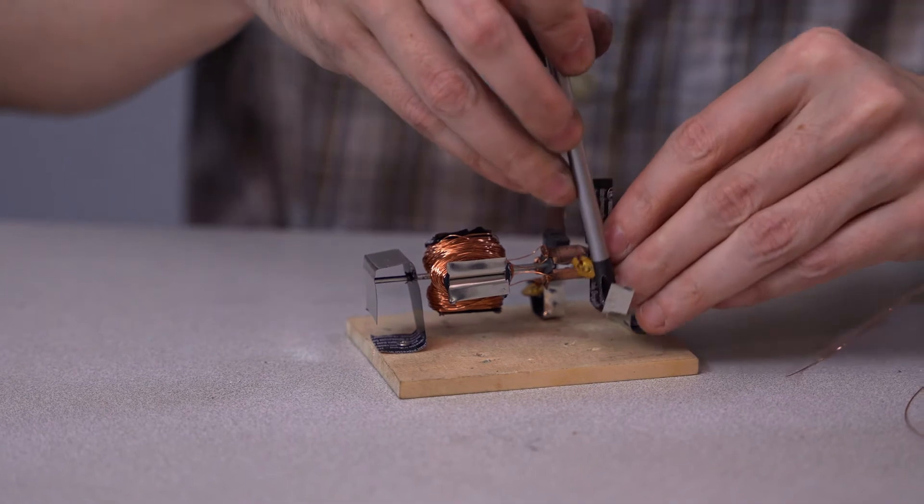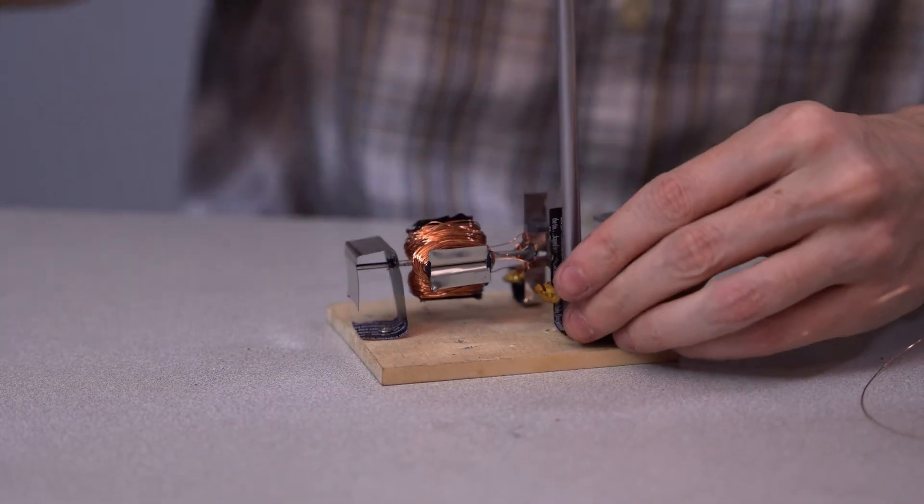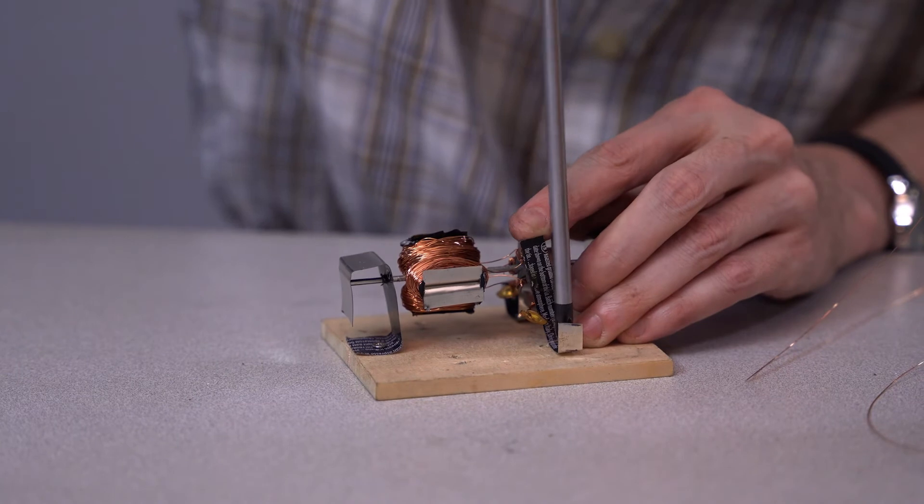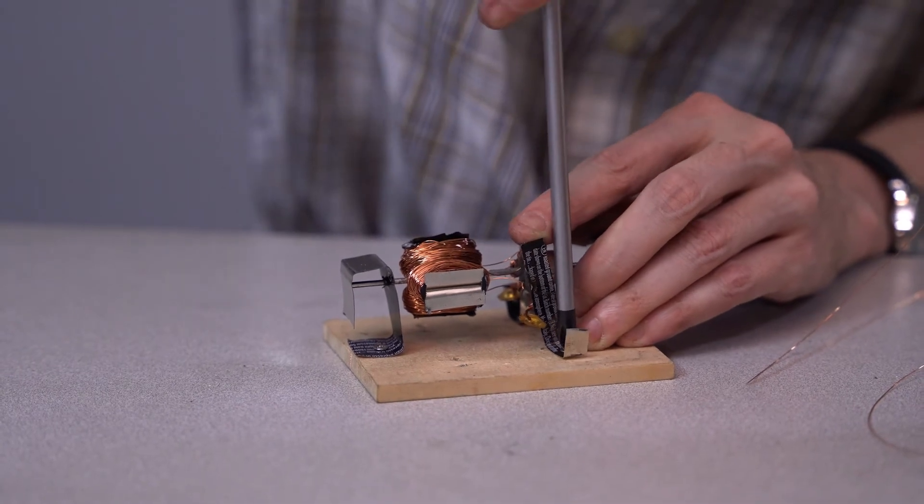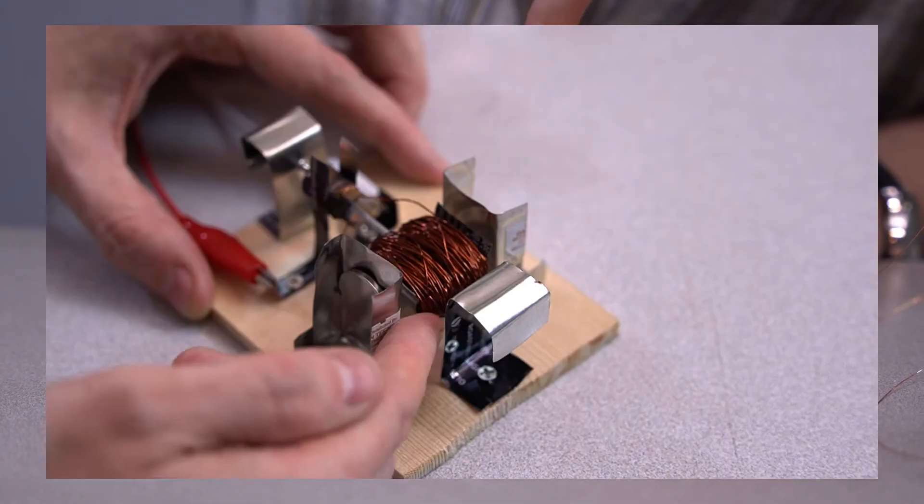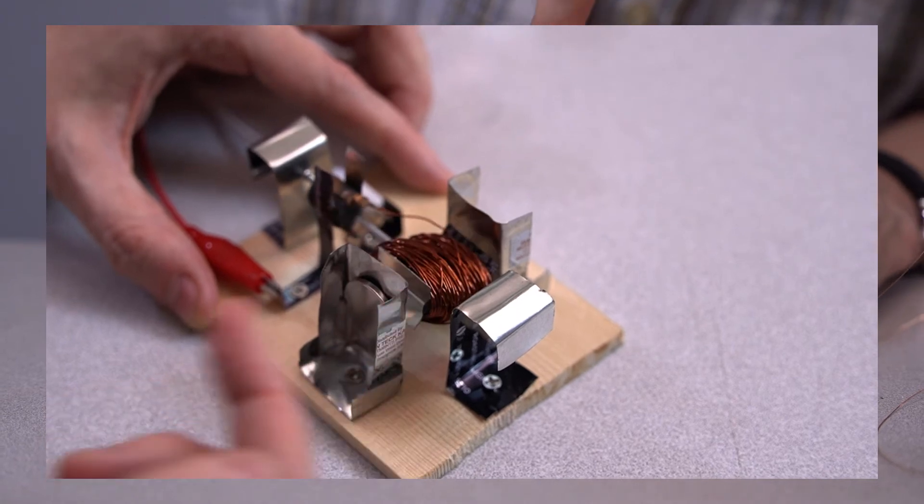I'm going to be making one more change in design from our 2-pole motor in order to help make the 3-pole motor self-starting. You might notice that in the 2-pole configuration, the magnets attract the stainless steel parts of the armature.